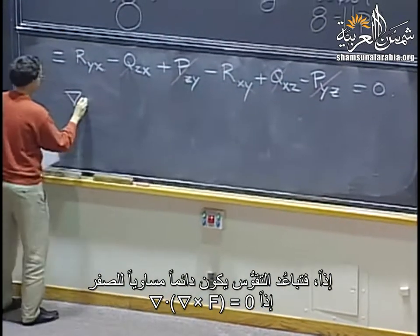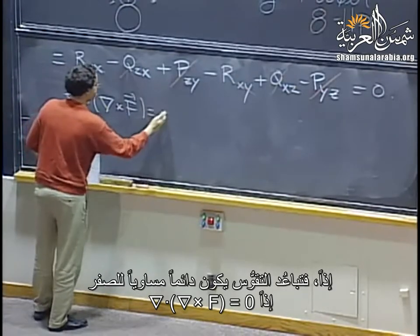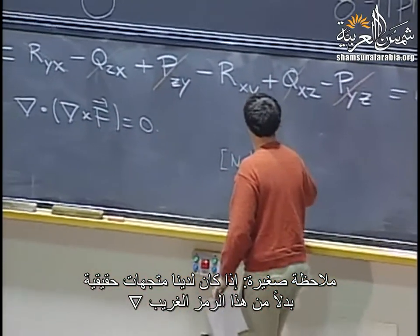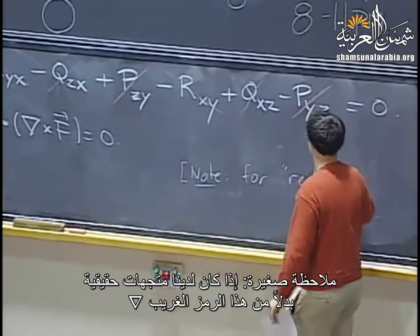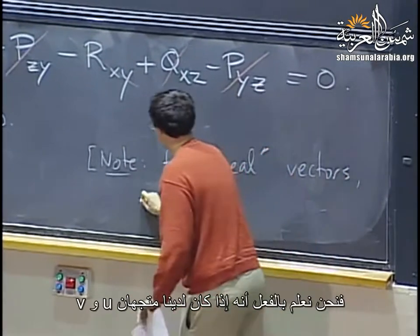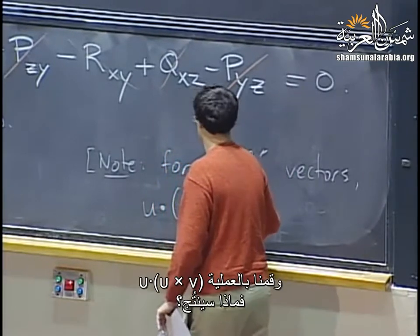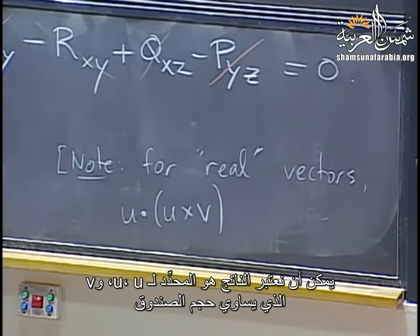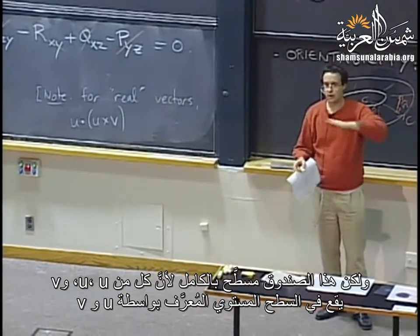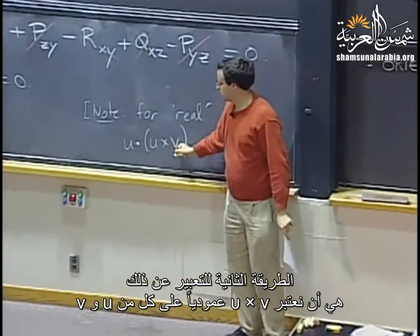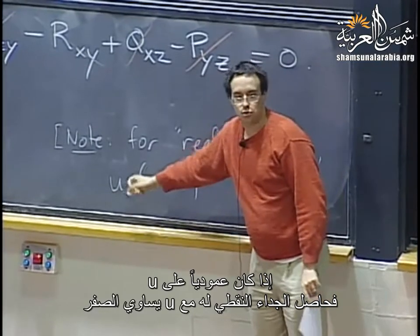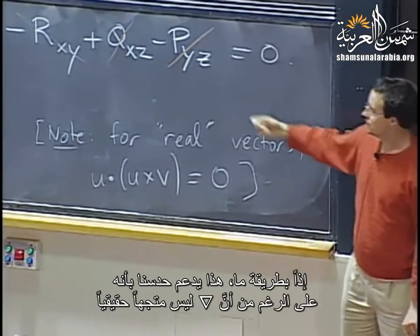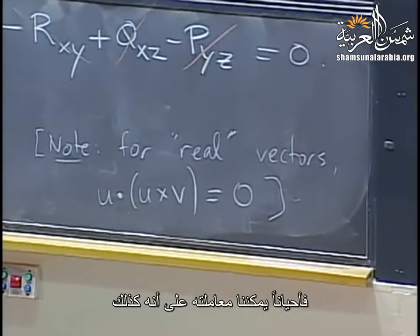The claim is: divergence of curl F = 0, i.e., ∇ · (∇ × F) = 0 always. A small remark: for real vectors u and v, u · (u × v) is zero because u × v is perpendicular to u. This reinforces our intuition that del, even though it's not an actual vector, can sometimes be manipulated the same way.